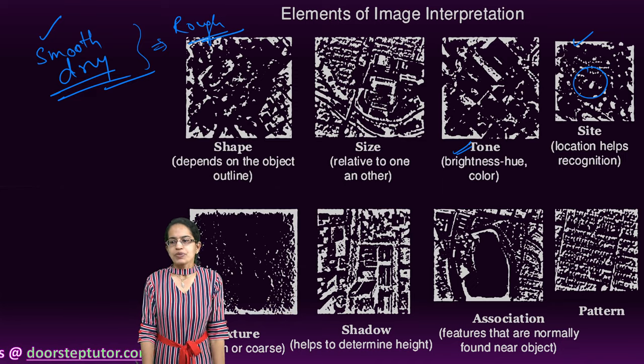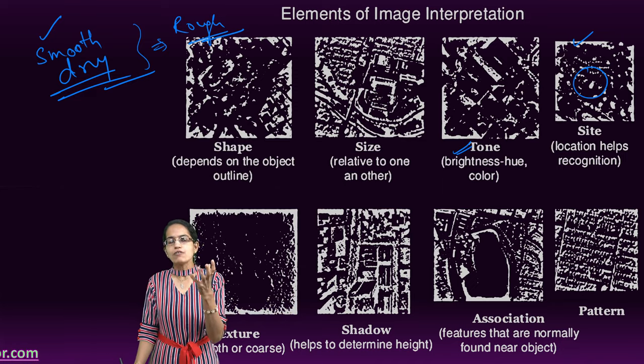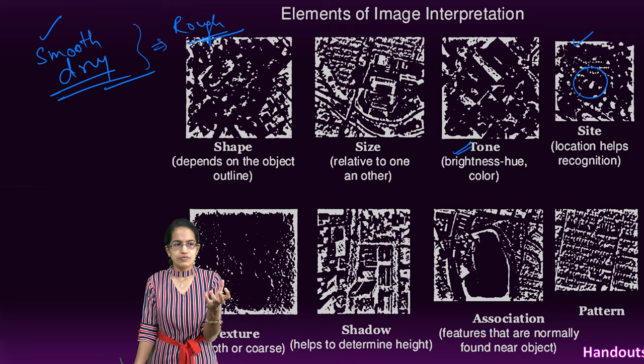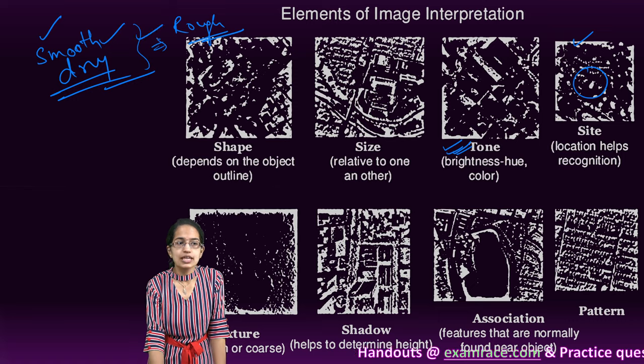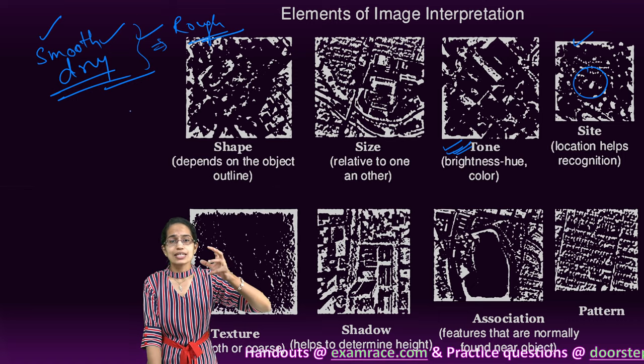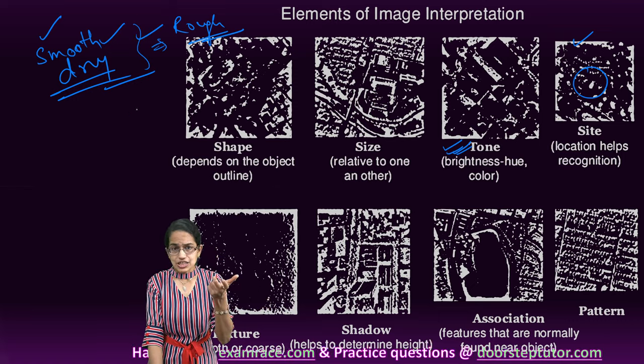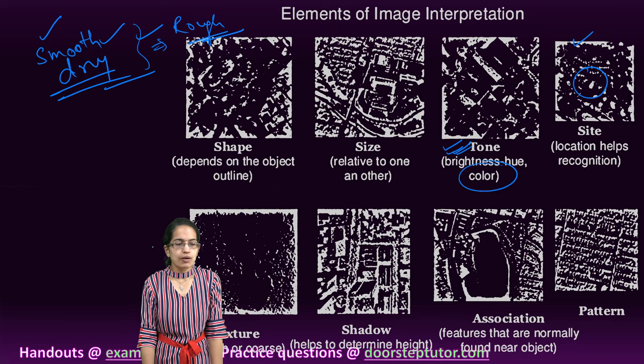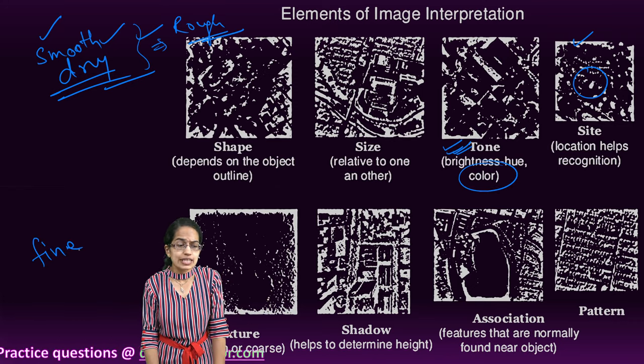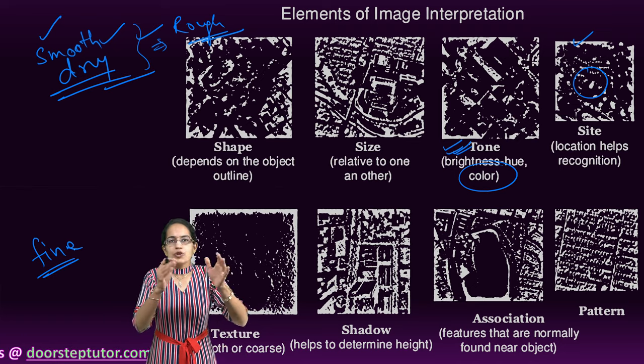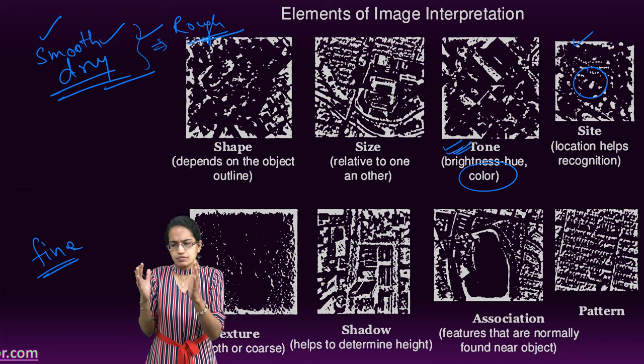The next is texture. Texture explains how smooth or coarse the surface is. Under the tone, we were understanding this smoothness and the roughness with the reflectance and the color shades. Here, we are talking about the fine or the coarse gradient. If it is a densely populated region, it would be much finer in the texture.